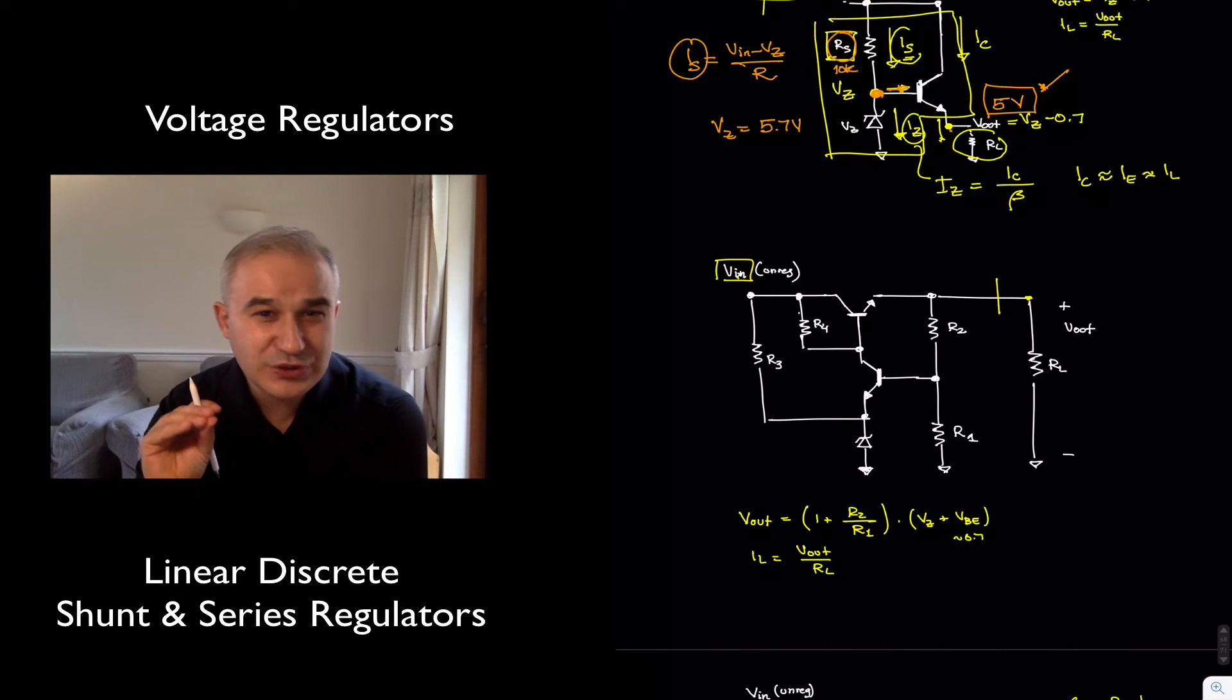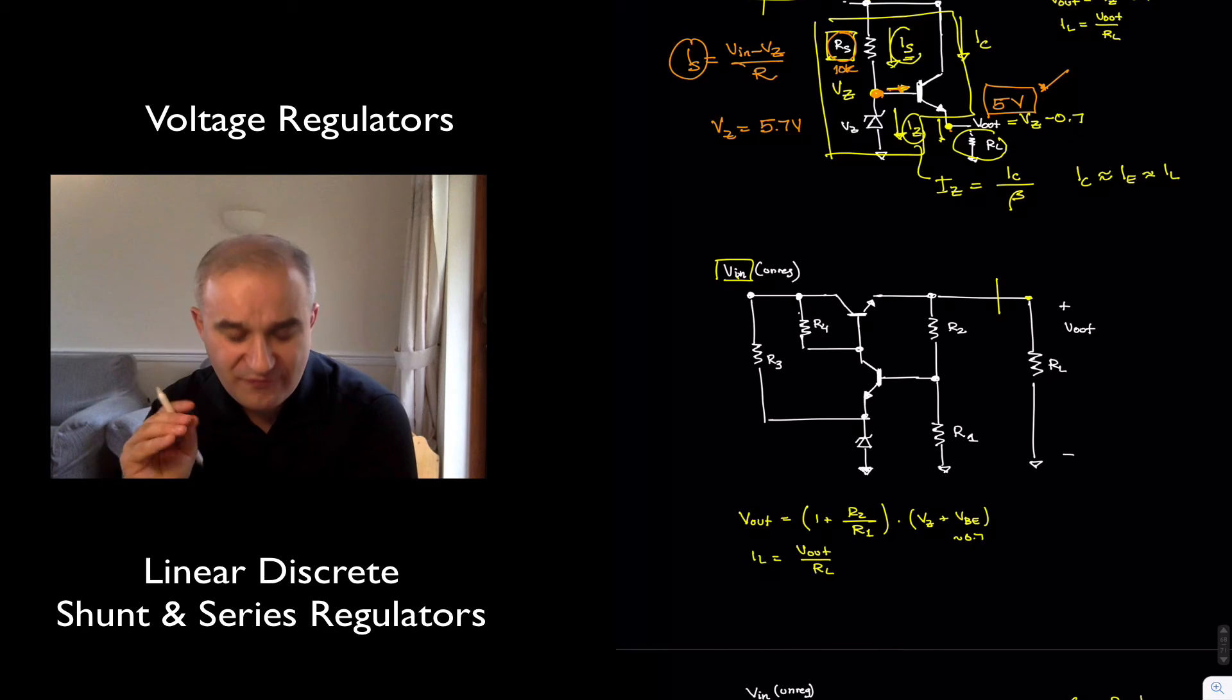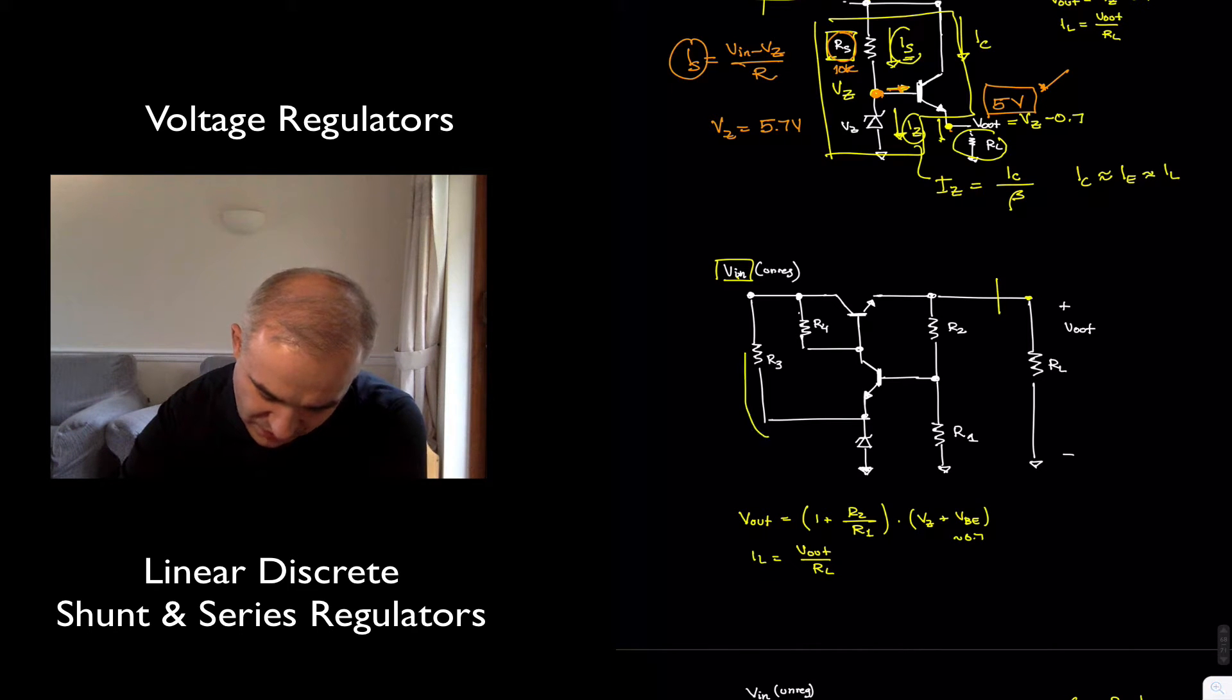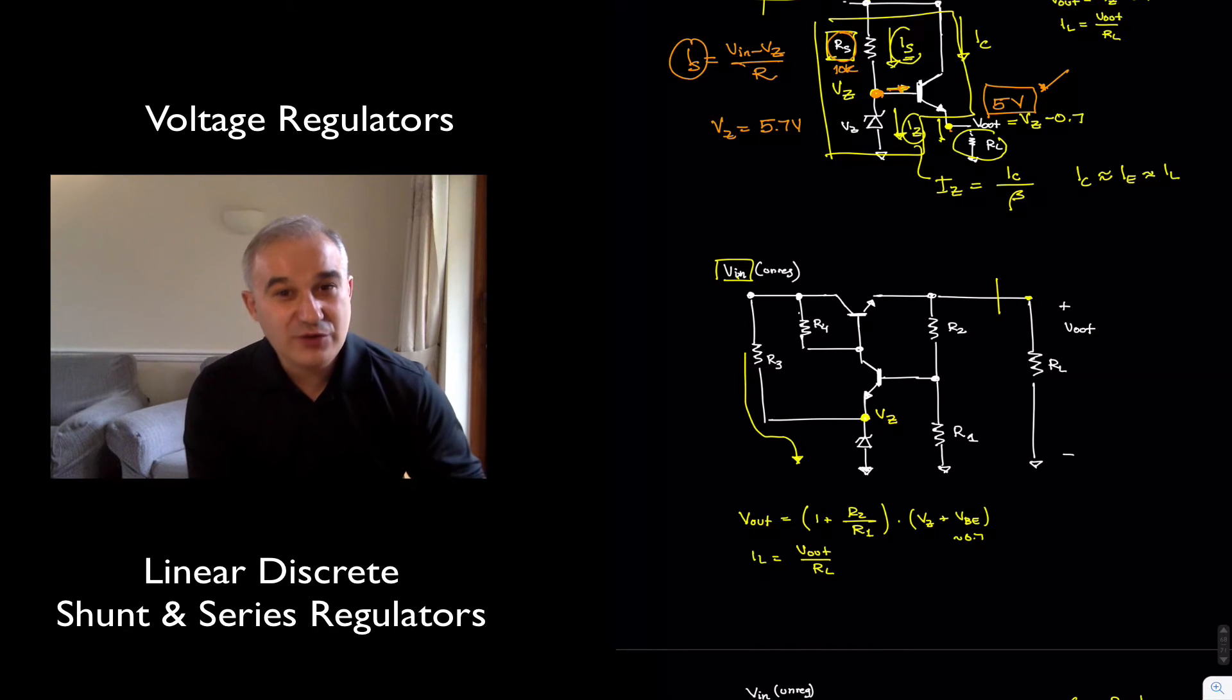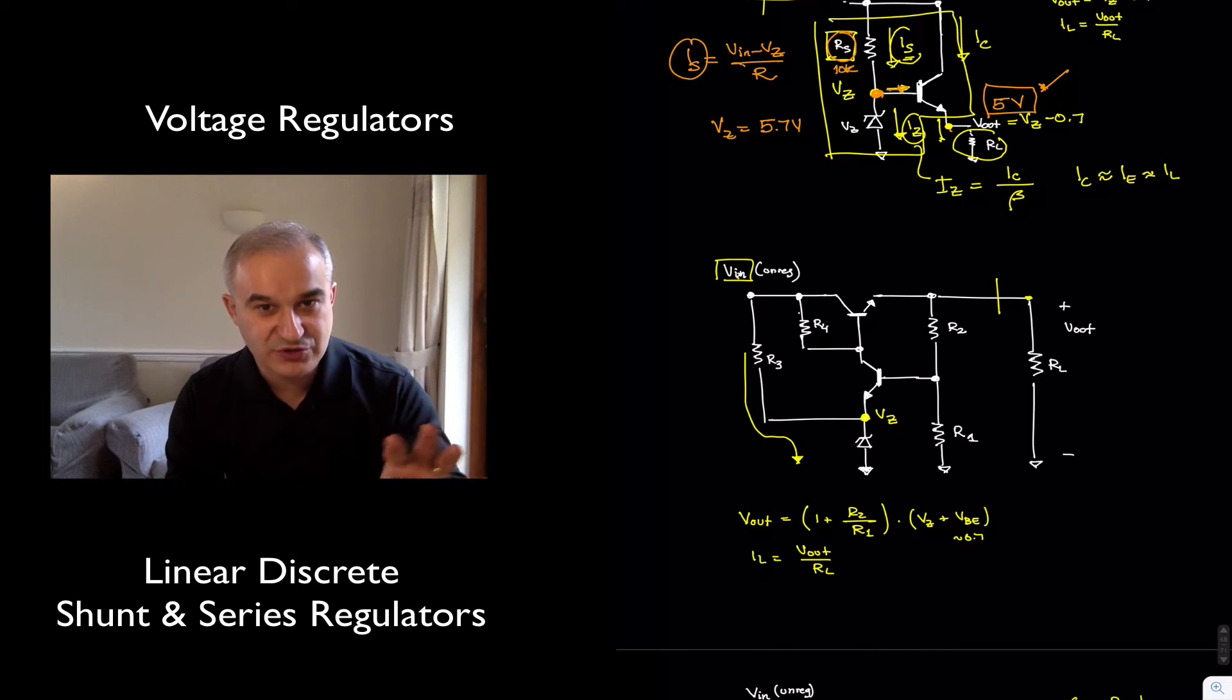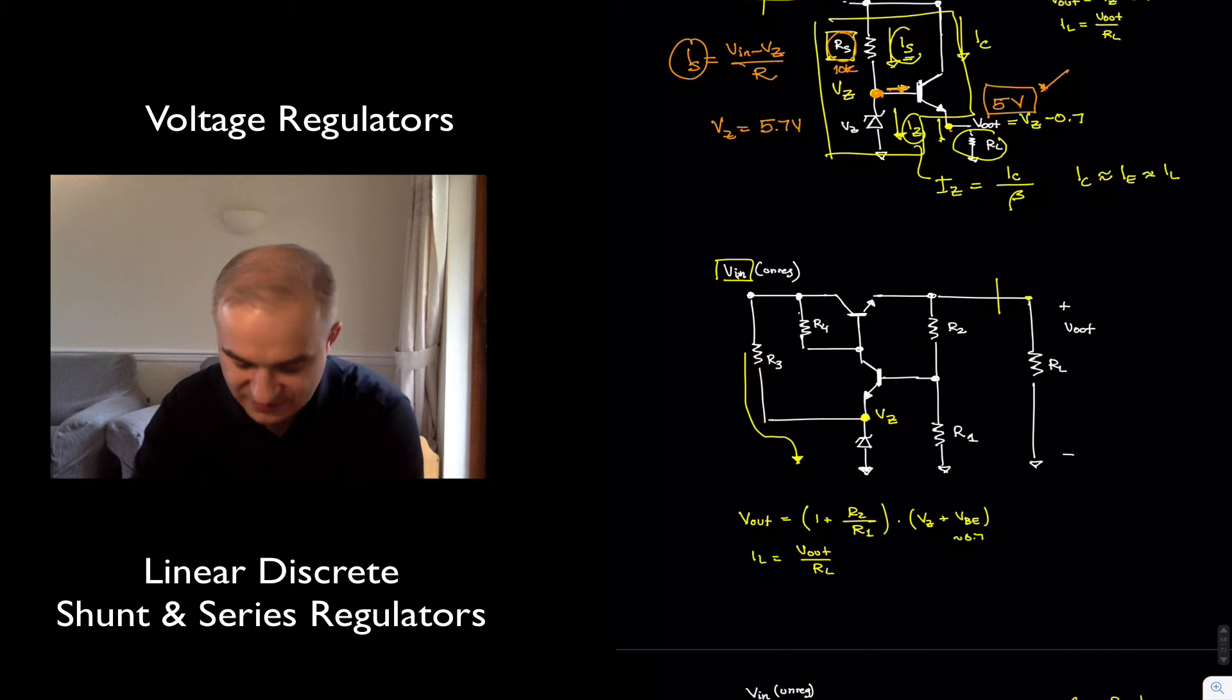As in the previous examples, we are using the Zener to establish a reference voltage. So as long as we have enough current here for the Zener to be in the reverse breakdown, in this node we are going to have the Zener voltage. We can use even a low-value Zener because the output voltage is going to be an amplified version of that voltage, the Zener voltage.